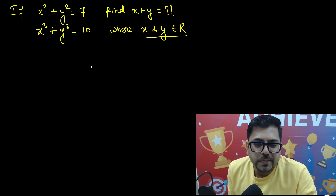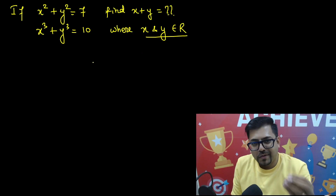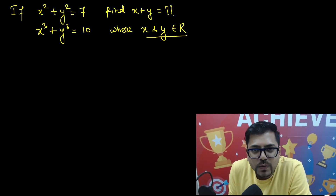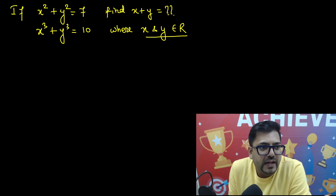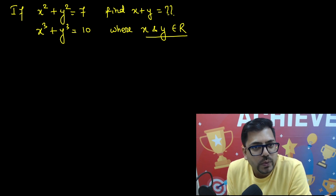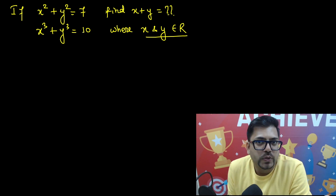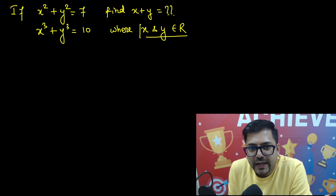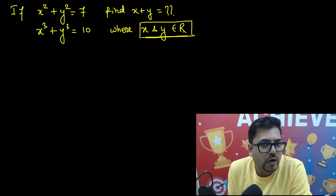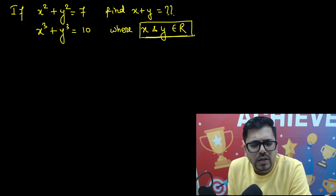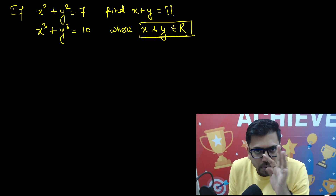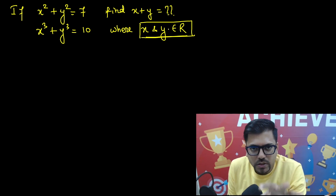Hey guys, let's talk about a beautiful question. Given that x squared plus y squared equals 7, and x cubed plus y cubed equals 10, you have to find the value of x plus y, given that both x and y are real numbers. This is a very beautiful problem, mostly asked in competitive examinations.